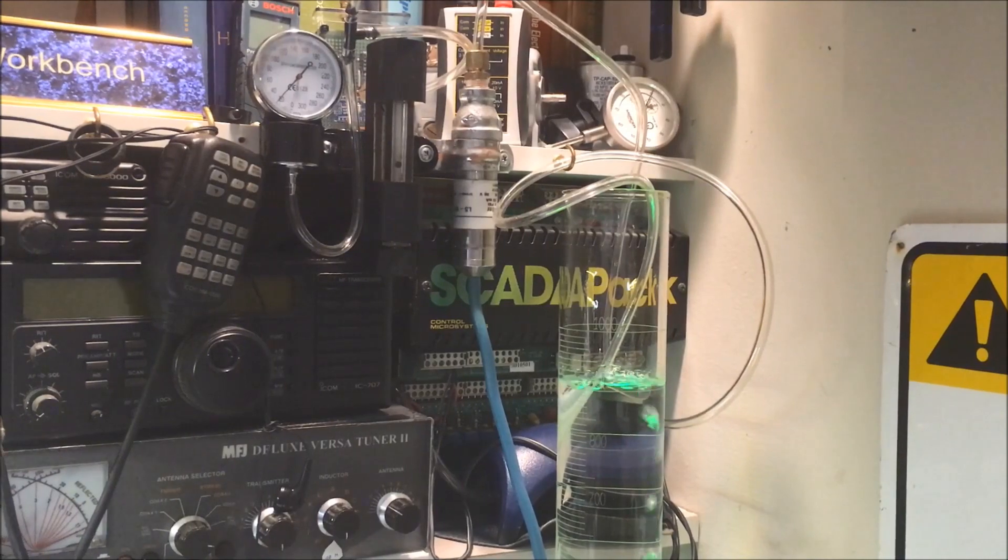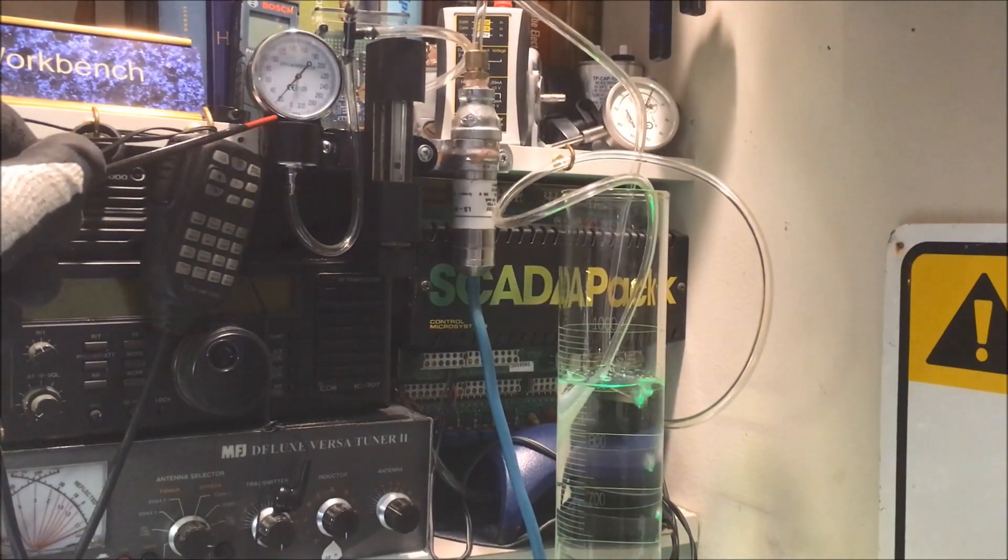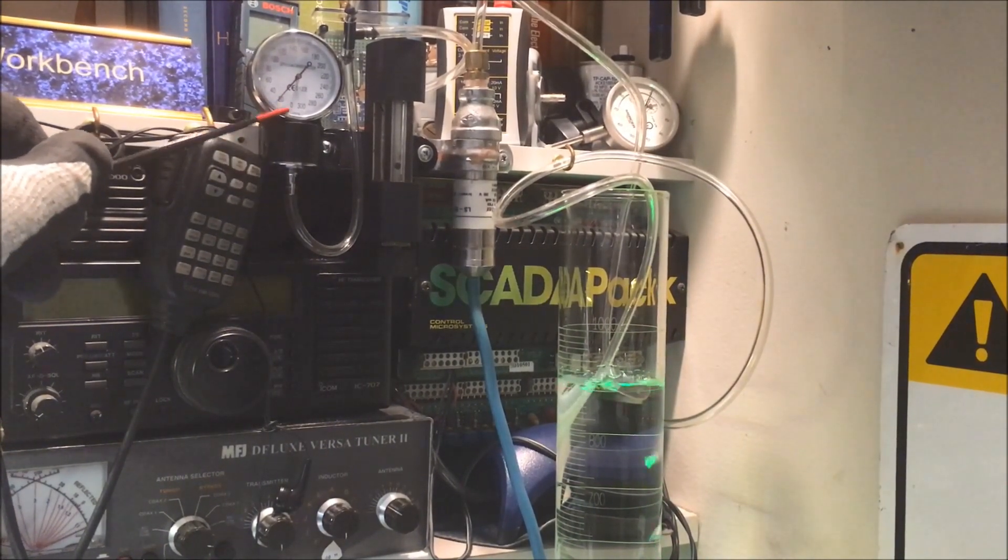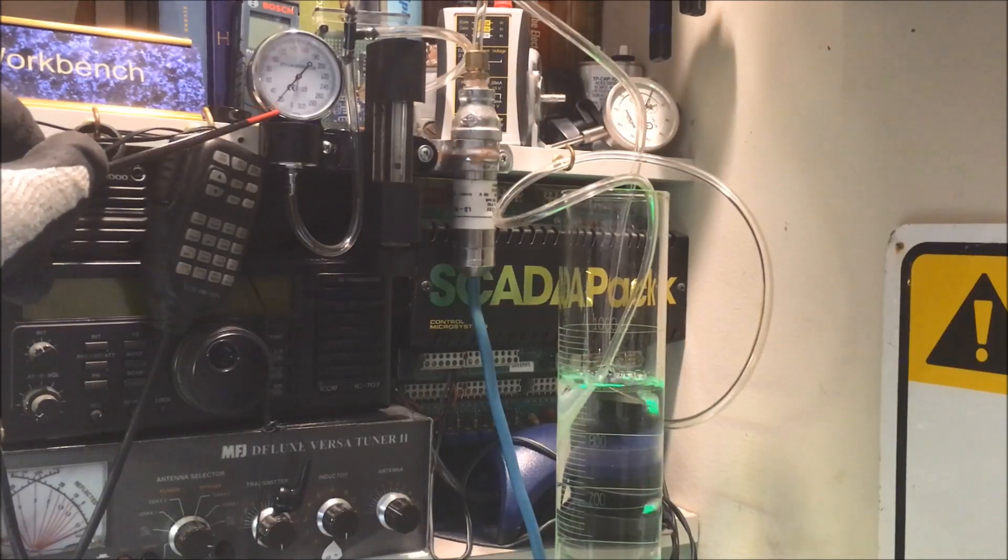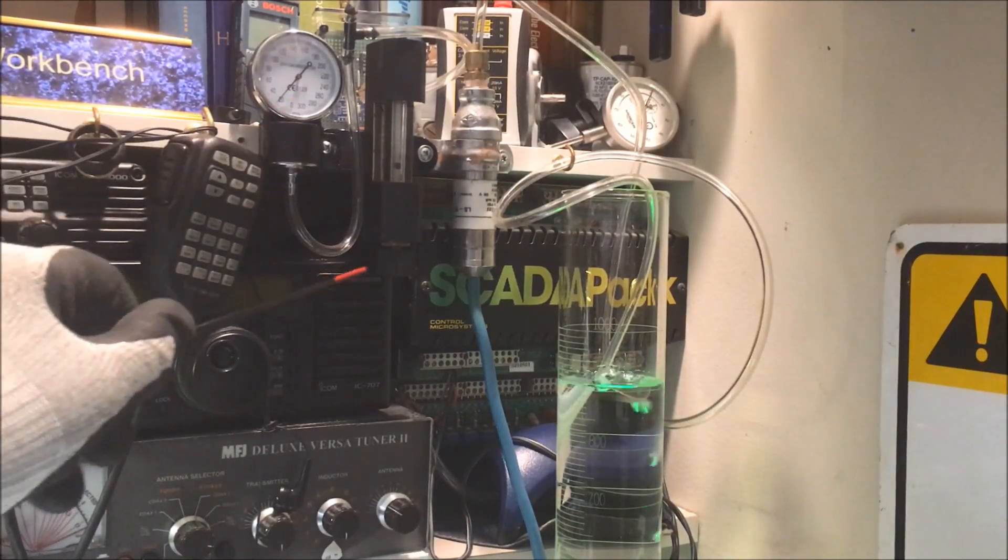All right, here we are at the work bench. This is our pressure gauge. It's in millimeters of mercury right now, and it's reading about 22 or so. That's about a foot of water.